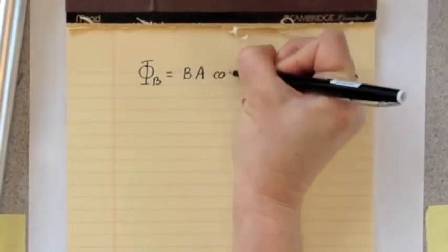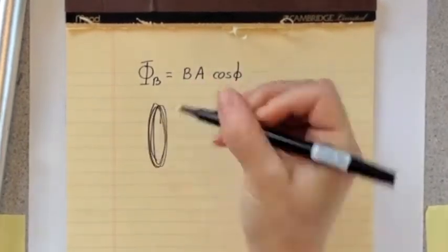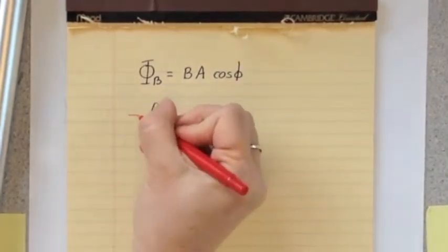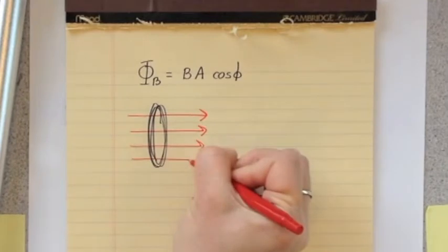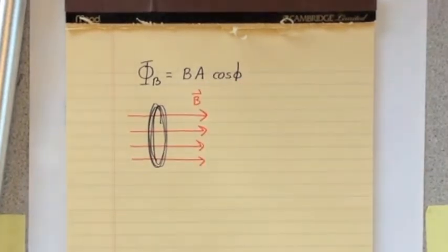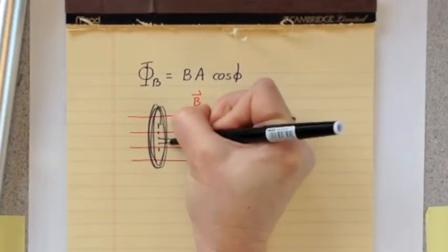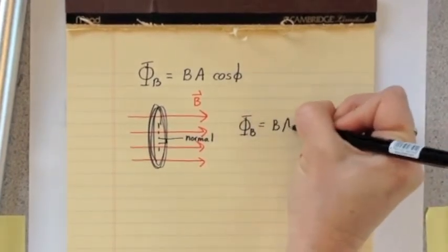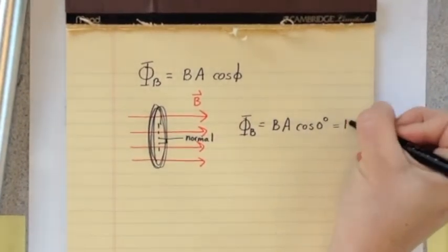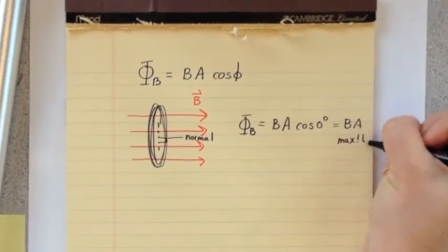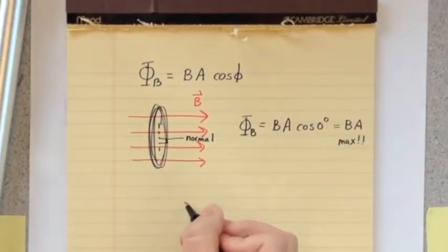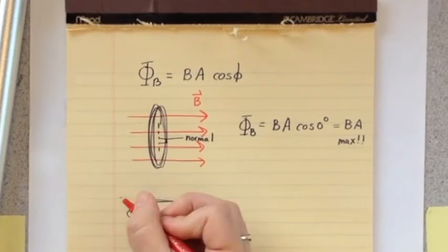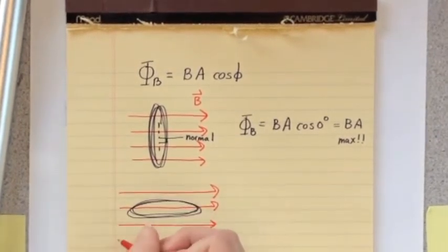First, let's remind ourselves what magnetic flux is. Magnetic flux is a product of the magnetic field strength B, the area A over which we are measuring the flux, and the cosine of the angle phi between the magnetic field and the normal to the area. If the magnetic field is normal to the area, then phi equals zero, and you get the maximum flux possible.